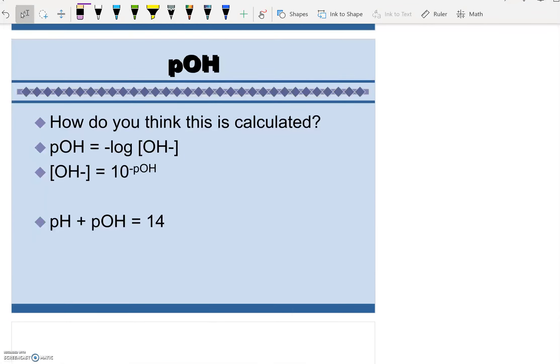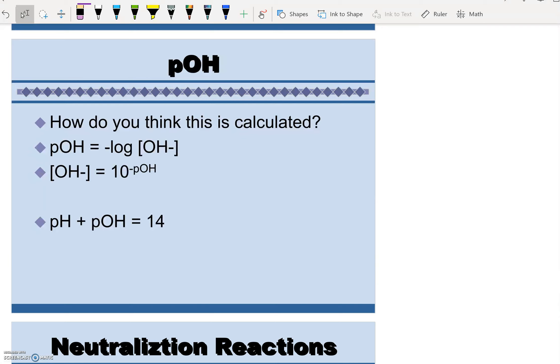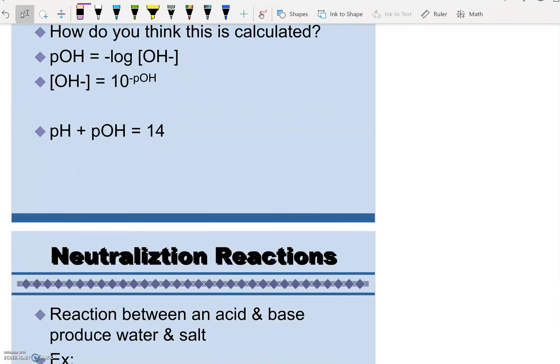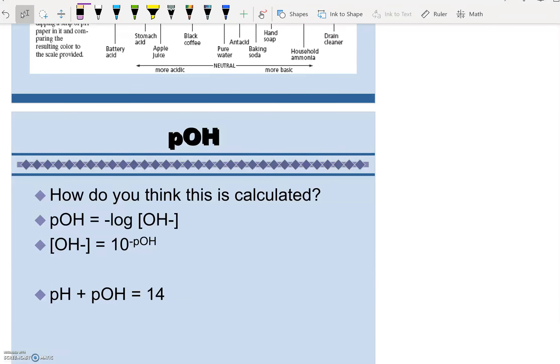So pOH is just like pH. pOH equals negative log of hydroxide and hydroxide equals 10 to the negative pOH. So I'm going to write both of these, all of our formulas over here. These are your have-to-know formulas.